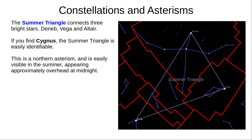The Summer Triangle crosses several constellations and connects three bright stars: Deneb, Vega, and Altair. In the Northern Hemisphere's summer, it appears roughly overhead at midnight. Find Deneb in Cygnus, and you can easily find the other two stars.